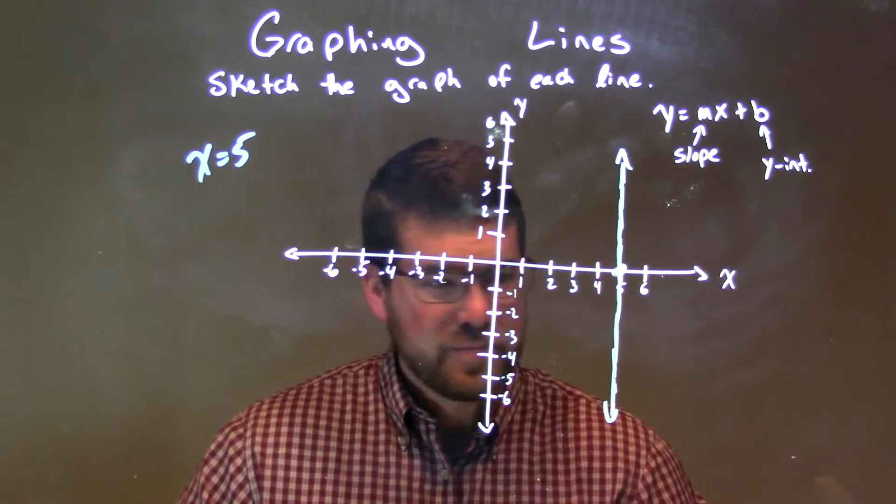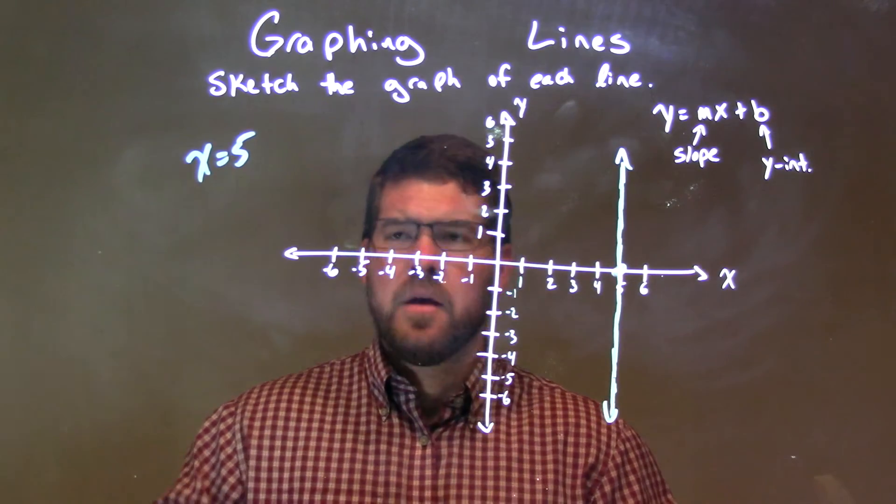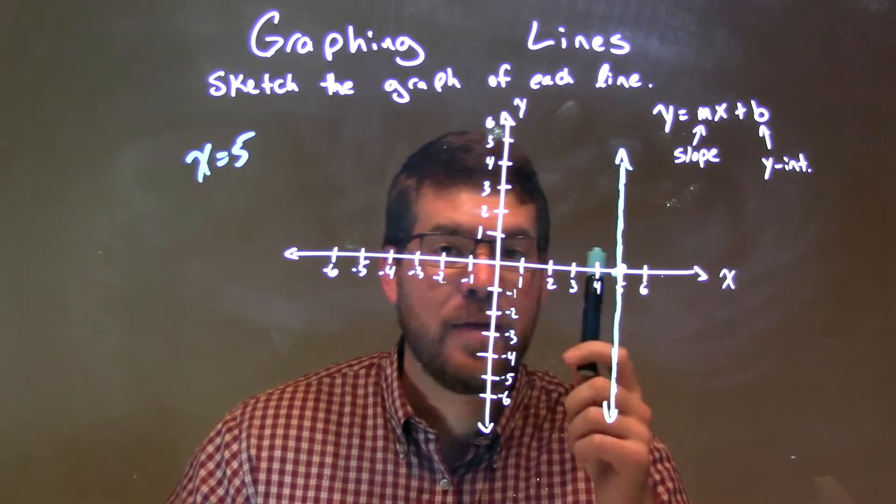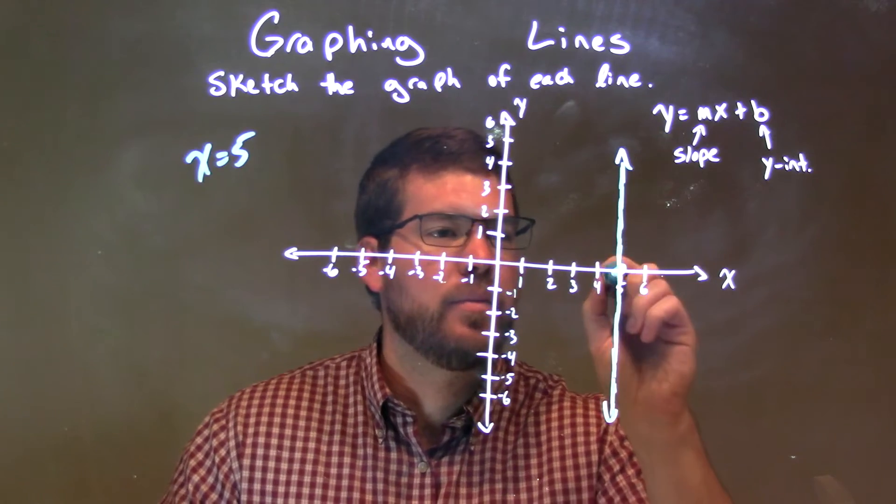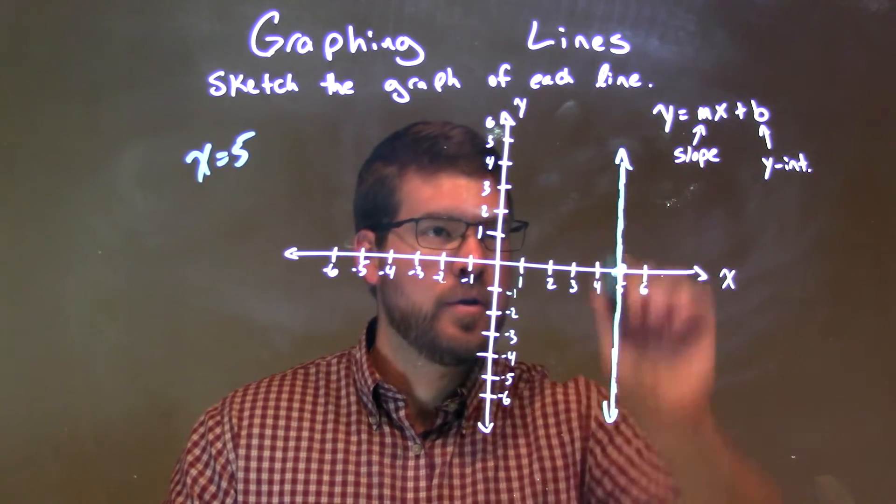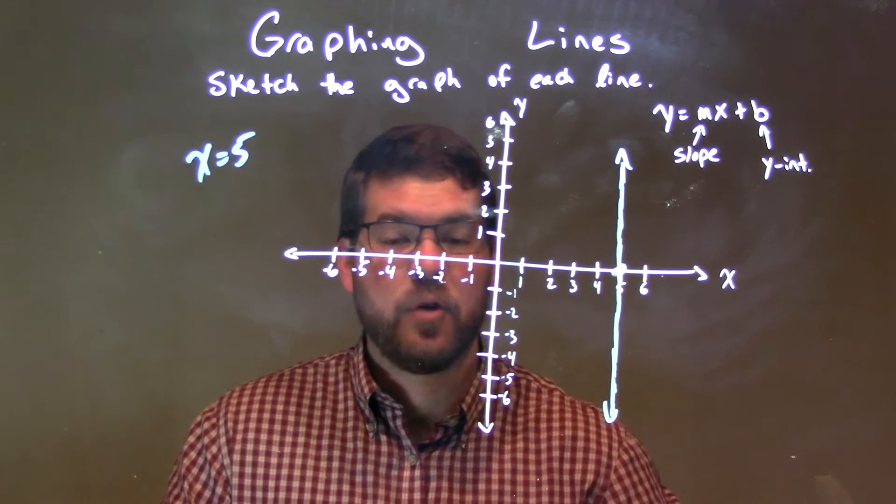Again, pretty quick recap here. When we have x equals 5, we cross the x-axis at 5, and that's where we put a vertical line. It's the only point where it touches the x-axis at 5. We have a vertical line through there, and that's our final answer.